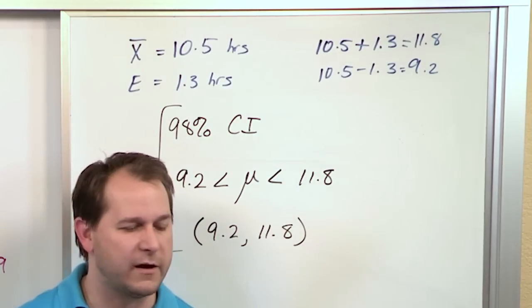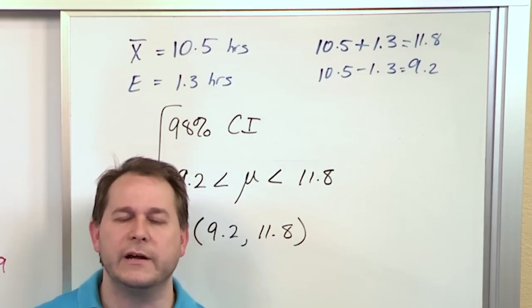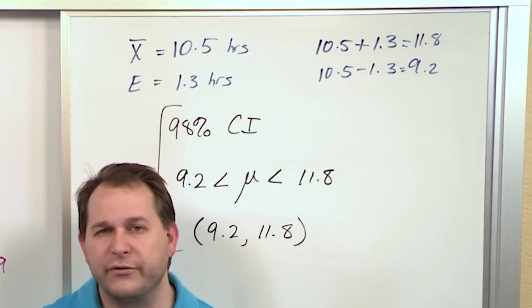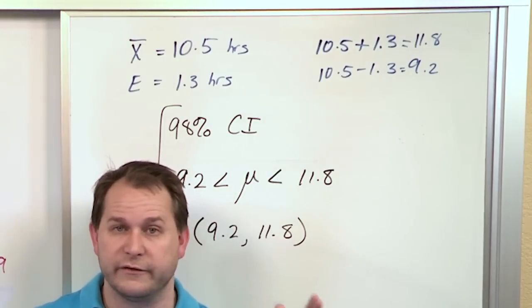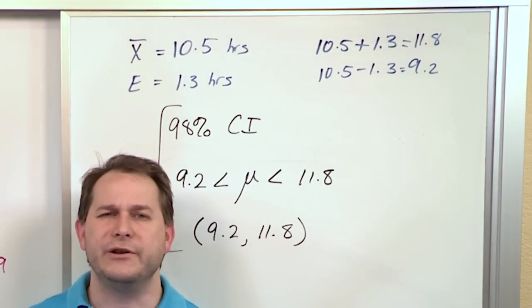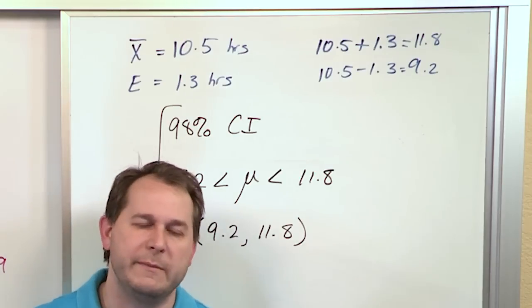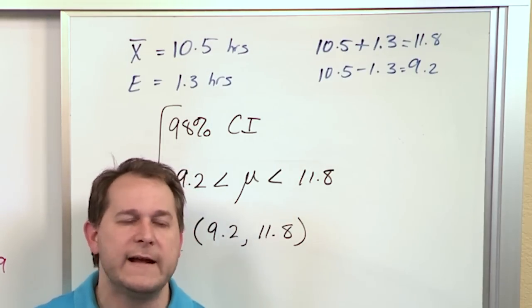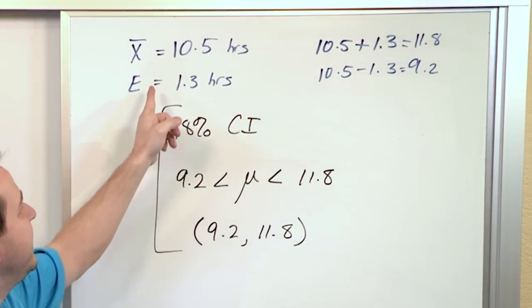That's what a confidence interval is, and that's why it's important. It's very useful, especially when you're looking at manufacturing. You might say you're 98% confident that your defect rate is going to fall within a certain range. But you can't study every single cell phone coming off the line. So what you do is you sample maybe 500 of them and get a good number based on that.